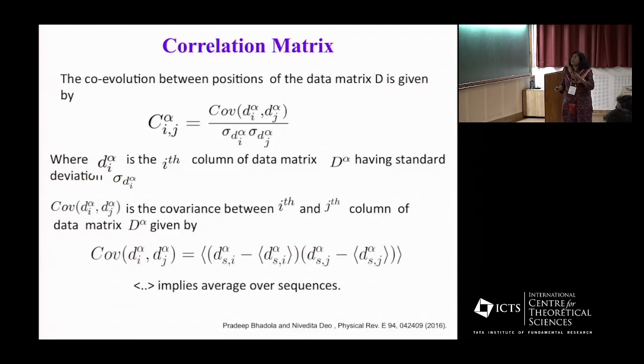Having the data matrix, we can do the correlation matrix or the covariance matrix. The i and j are the columns in the data matrix, and sigma is the standard deviation. The covariance is defined as usual, and one is averaging over sequences. This work I have reported here, and there's some work that is published.